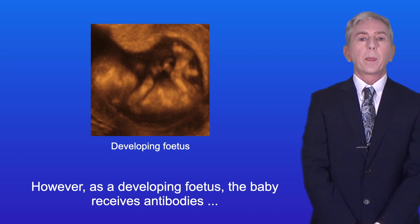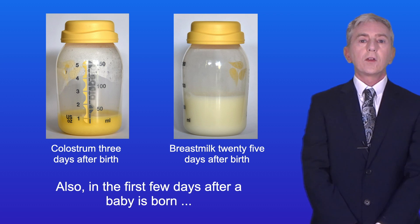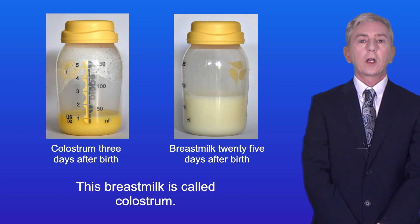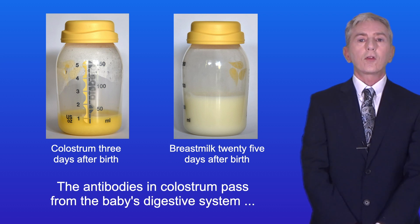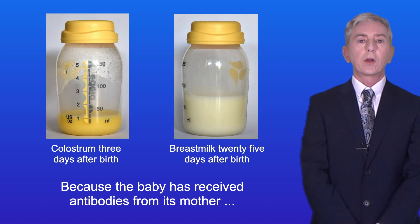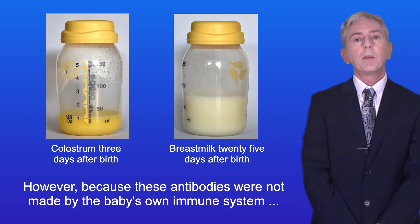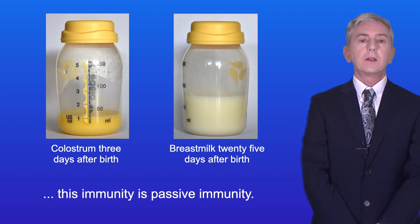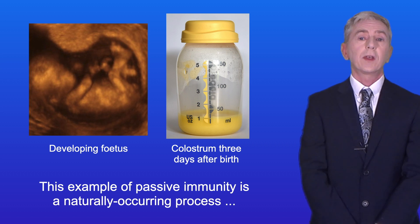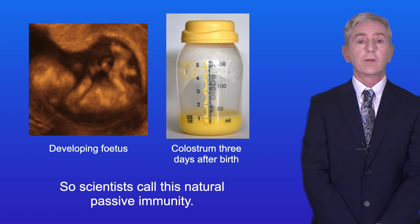However, as a developing fetus, the baby receives antibodies from the mother through the placenta. Also, in the first few days after a baby is born, the mother's breast milk is very rich in antibodies — this breast milk is called colostrum. The antibodies in colostrum pass from the baby's digestive system into the baby's bloodstream. So because the baby has received antibodies from its mother, the baby has some immunity to pathogens. Because these antibodies were not made by the baby's own immune system, this immunity is passive immunity. This is a naturally occurring process that takes place in all mammals, not just humans, so scientists call this natural passive immunity.